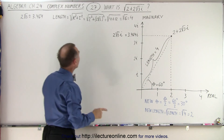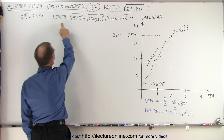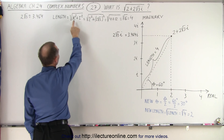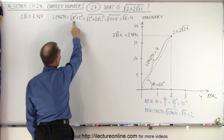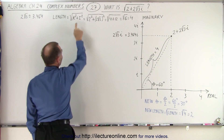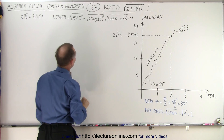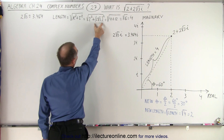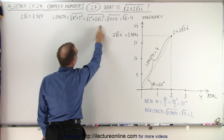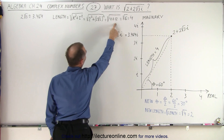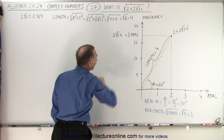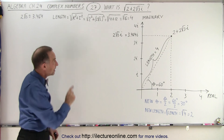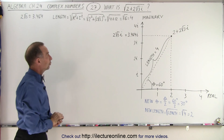How do we know that? The length will be equal to the square root of the real part squared plus the imaginary part squared. So it will be the square root of 2 squared plus (2 times the square root of 3) squared, which is the square root of 4 plus 12, which is the square root of 16. And of course, the square root of 16 is equal to 4.